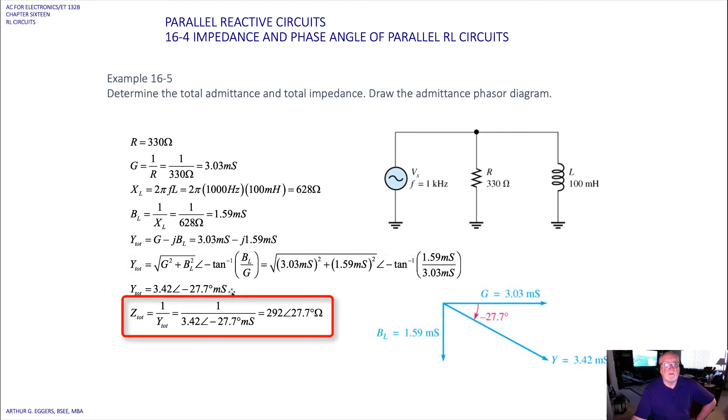Now we take the inverse of that to get the total impedance because it asks for the total impedance in our phasor diagram. So 1 over Y_total is that inverted: 3.42, take the inverse, the angle moved into the numerator becomes a positive angle, 27.7 degrees. Is that correct?